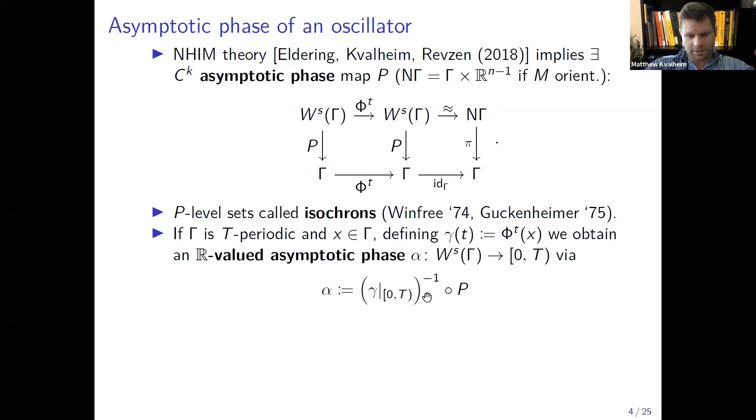For example, if you want real valued phase you just pick a solution parameterization of the limit cycle, restrict to the interval zero T where T is the period and post compose the inverse of that with P and this gives you the standard real valued phase. I'll say more about this representation later on. It ends up being important for our algorithm, the fact that this representation is discontinuous. But phase gives you a simple reduced ordered model for the system which just evolves at rate one on this interval zero to T.